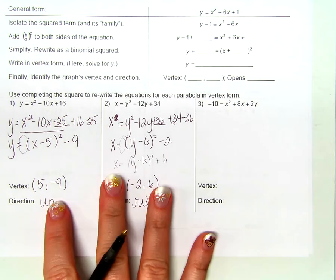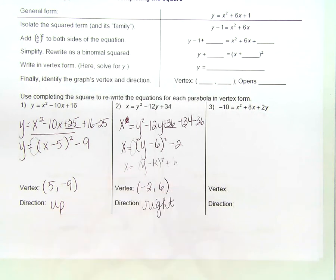But if I add 36 there, I need to subtract 36 there. Right? Because I'm working on the same side of the equal sign, aren't I? It's just y. Y minus 6 squared. Everything else was right. And what is 34 minus 36? Negative 2. Guys, look. That's vertex form.